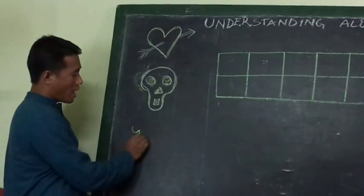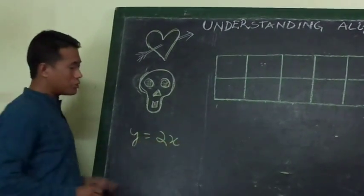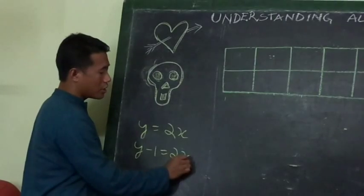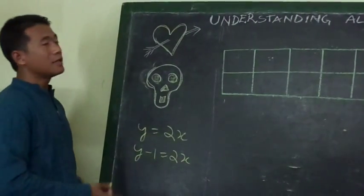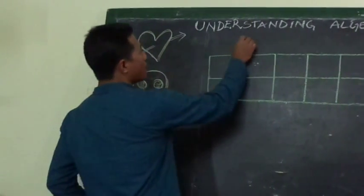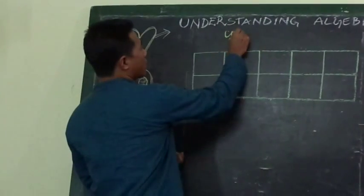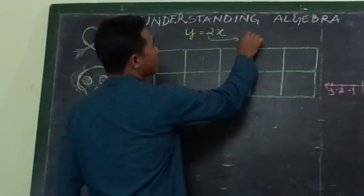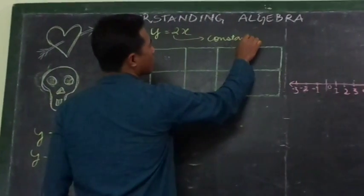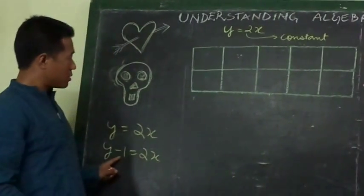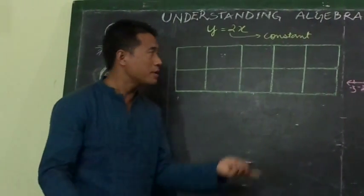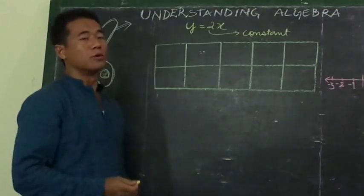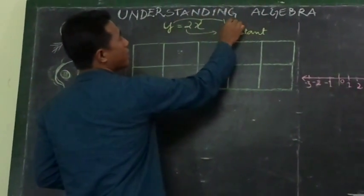First symbol: y equals to 2x. That is the symbol. Normally y minus 1 equals to 2x — that is also a symbol. Here y equals to 2x; 2 is a constant. The constant does not change — 2 stays 2, not 3, not 5.